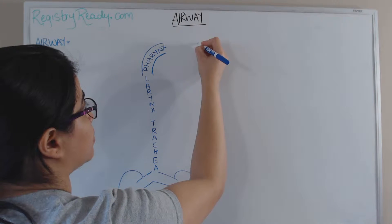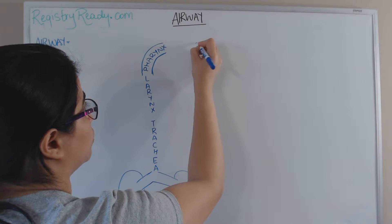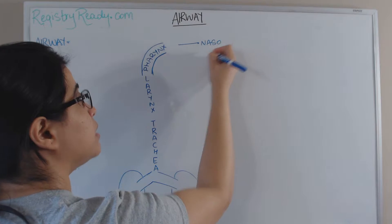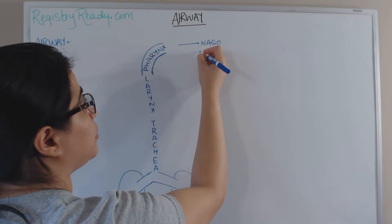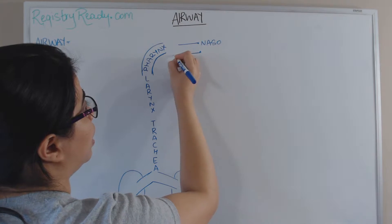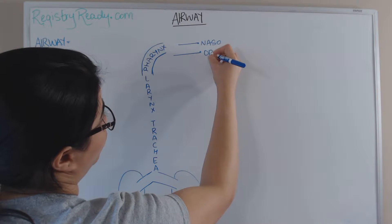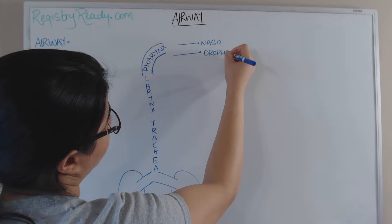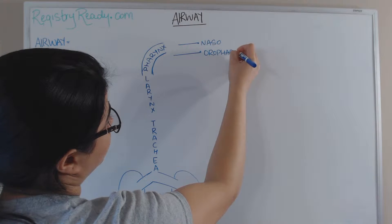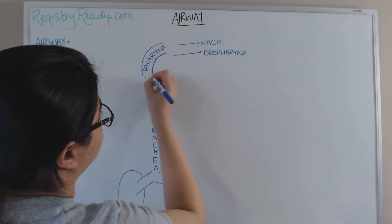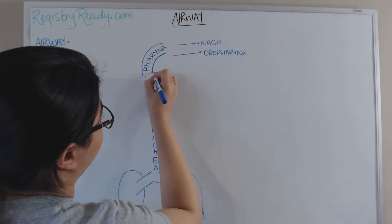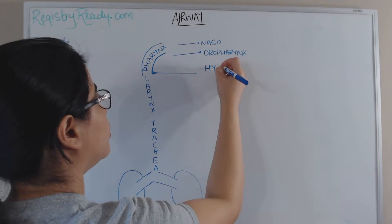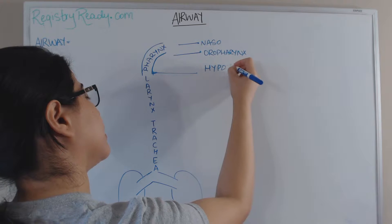The part of the pharynx behind the nose is known as the nasopharynx. The part behind the mouth is known as the oropharynx. And the base of the pharynx is known as the hypopharynx.